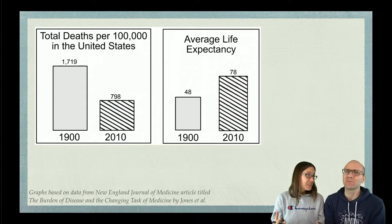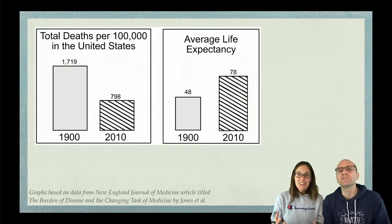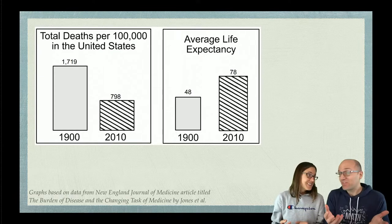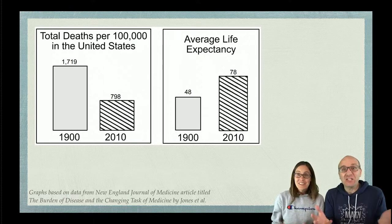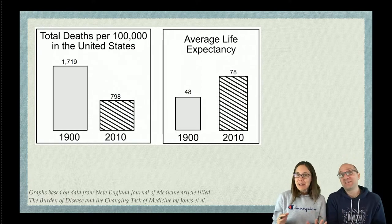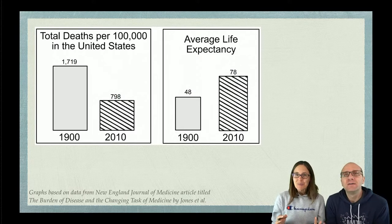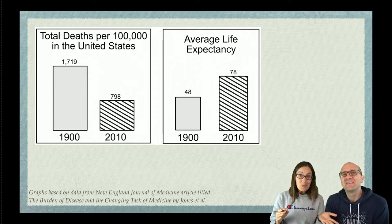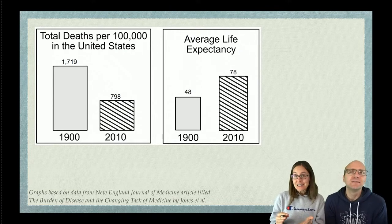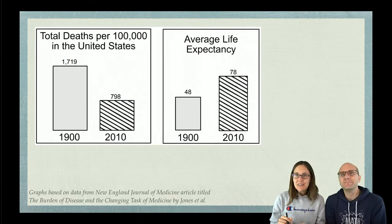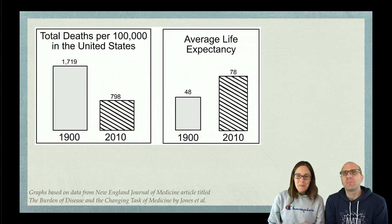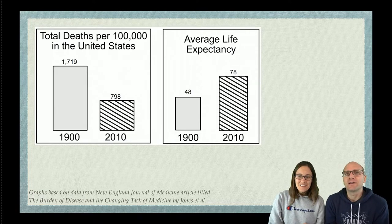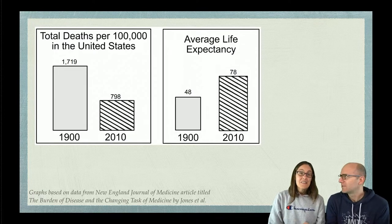Life expectancy went from 48 to 78 — that's not quite doubled, because if it doubled it would be 96, and 78 is not the same as 96. Still, I'm glad to live now and not in 1900 when I look at that number. People are living longer now than they did in 1900 and deaths are much lower.